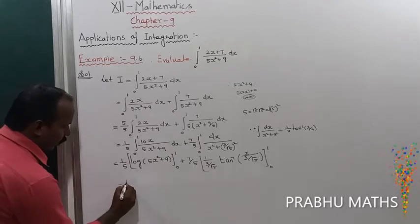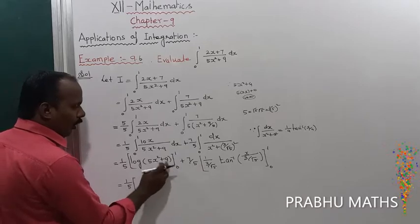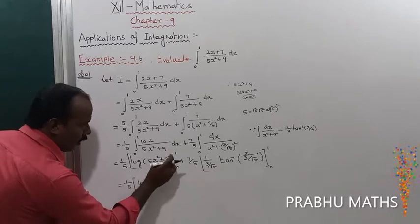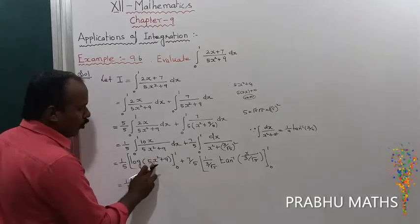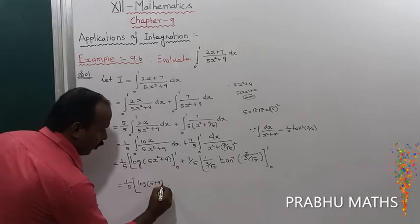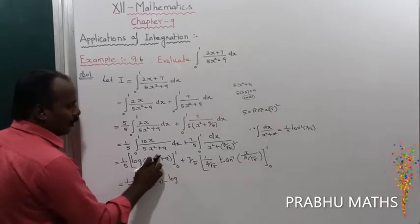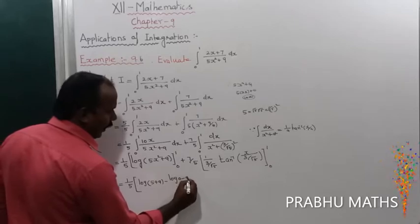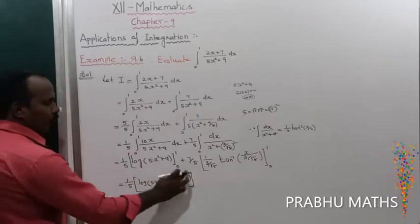That equals (1/5) · [applying upper limit 1: log(5·1² + 9) = log(14), minus lower limit 0: log(0 + 9) = log(9)]. So the first term is (1/5)·[log(14) − log(9)].